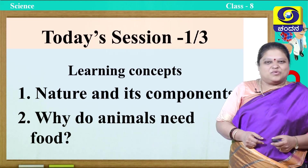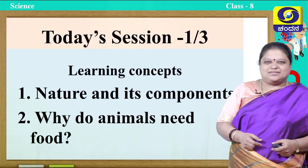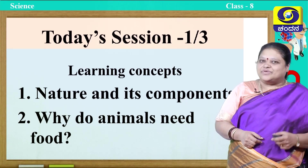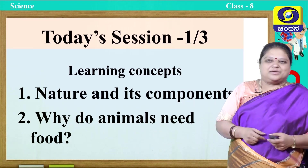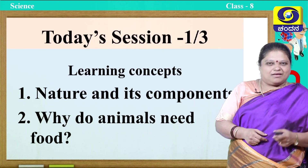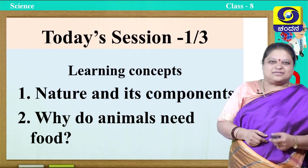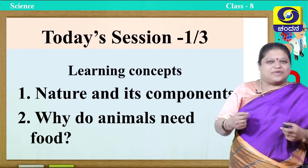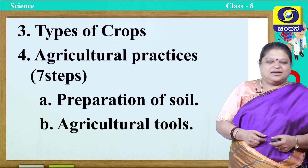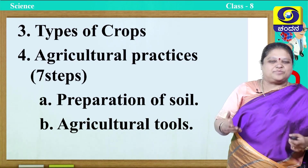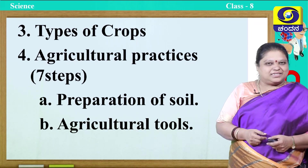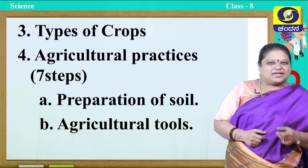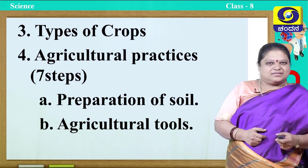Today's session — what are the concepts that we are going to learn? First of all, we will learn what is nature and we will also learn the different components present in nature. Next, a most basic important thing: why do animals need food? Do we require food and why do we need it? We will study about that. Next, we will study about the different types of crops present in India and the various types of agricultural processes involved in agriculture.